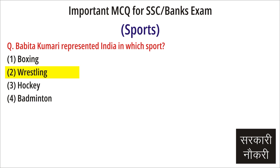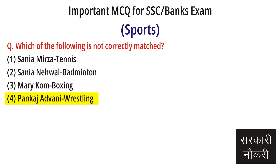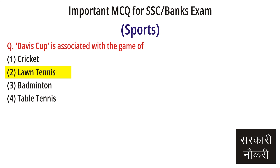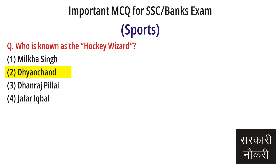Question: Babita Kumari represented India in which sport? Answer: Wrestling. Question: With which sport is PV Sindhu associated? Answer: Badminton. Question: Which of the following is not correctly matched? Answer: Pankaj Advani – Wrestling. Question: Davis Cup is associated with the game of? Answer: Lawn Tennis.